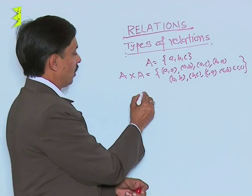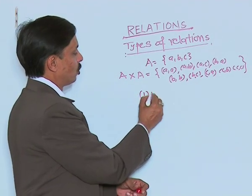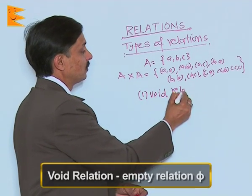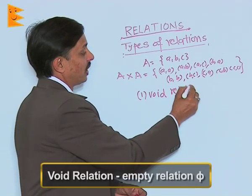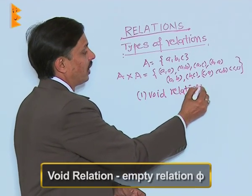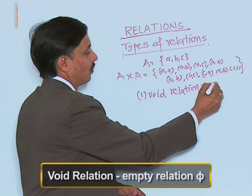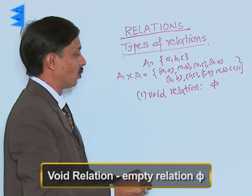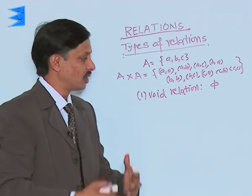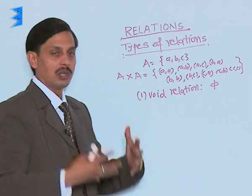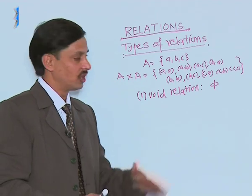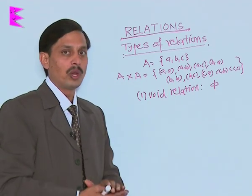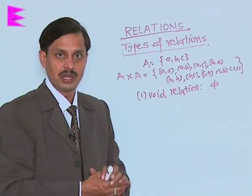The first is known as the void relation. What is the void relation? It is phi — very simple to understand. Empty relation, null relation, or void relation — phi itself is known as the void relation.